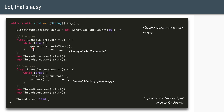We have a Runnable for a producer which in an infinite loop keeps adding new items to the queue. We use this Runnable to start two producer threads. Similarly, a consumer Runnable in an infinite loop takes items out of the queue and processes them, and we start two consumer threads. The blocking queue implements blocking operations — if a producer tries to add to a full queue it blocks, and if a consumer tries to take from an empty queue it blocks.